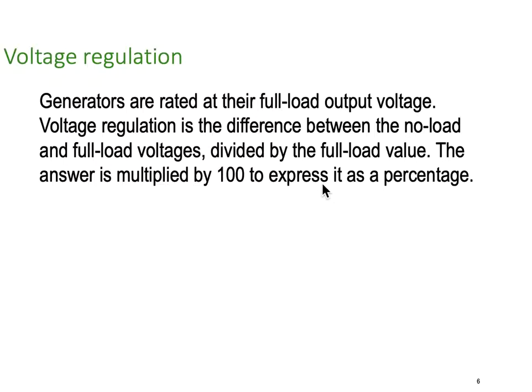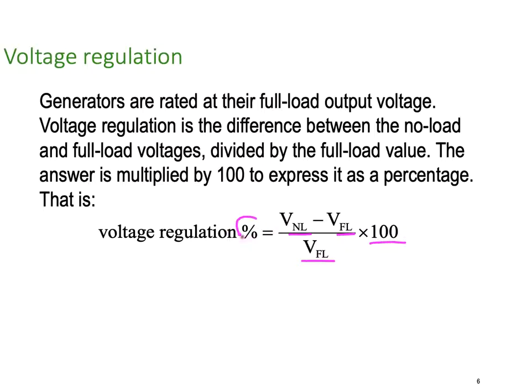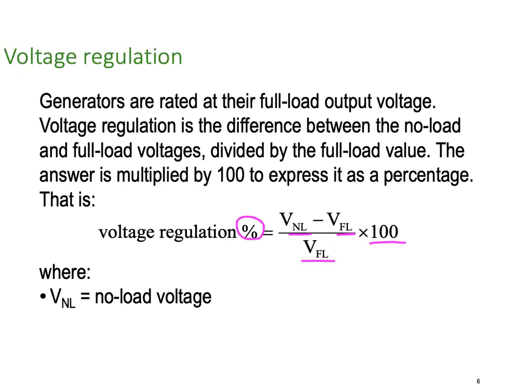Generators are rated at their full load output voltage. Voltage regulation is the difference between no load and full load voltages divided by the full load value, expressed as a percentage. The formula is: percent voltage regulation equals VNL minus VFL, multiplied by 100, all divided by VFL. NL is no load, FL is full load.